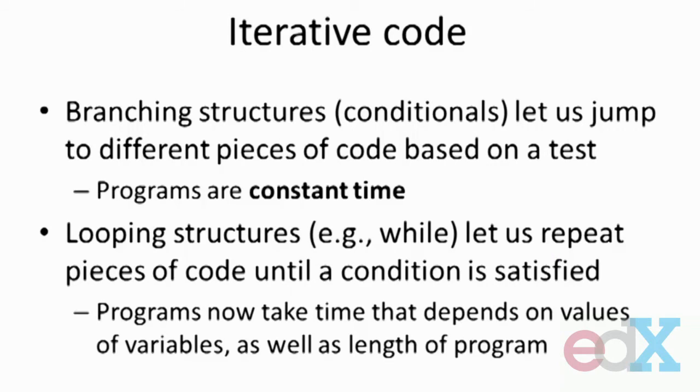So what do we have now? Well, that's a really valuable construct. We already saw that branching structures, things like conditionals, will let us jump to different pieces of code based on a test. Once we add in the idea of looping over the code, things like a while loop, that allows us to repeat pieces of code until the condition is satisfied. So it's a generalization of a conditional. On branching, simple branching structures, we've already said that programs like that are constant time. That is, we execute each instruction at most once.